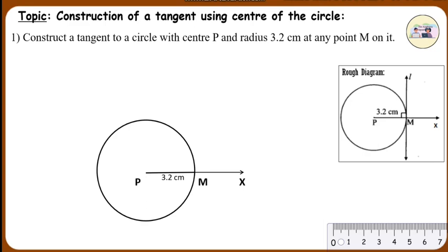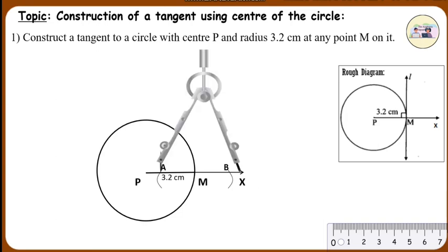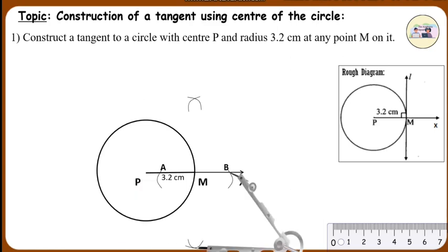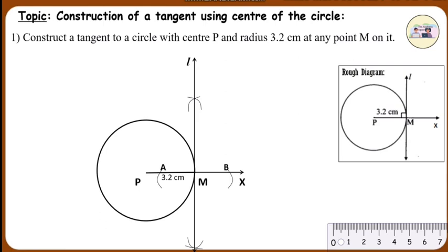Take a convenient measurement on the compass and cut two arcs on both sides of point M on the ray PX. Name the two points A and B. Take a measurement more than half of segment AB and cut two arcs above and below the ray PX. Draw line L through the intersection points of these arcs, which is perpendicular to the radius PM and passes through the point M.